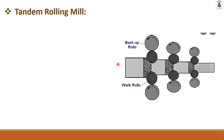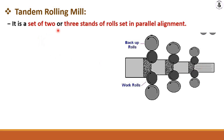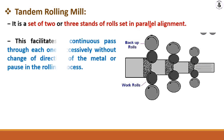Next are tandem rolling mills. In a tandem rolling mill, there are a number of backup rollers along with working rollers. The workpiece is fed at one end and undergoes a large amount of reduction in cross-sectional area in a single pass. Two or three stands of roll sets are placed in parallel alignment, facilitating a continuous pass through each stand successively without changing the direction of the metal, reducing manufacturing time and increasing productivity.